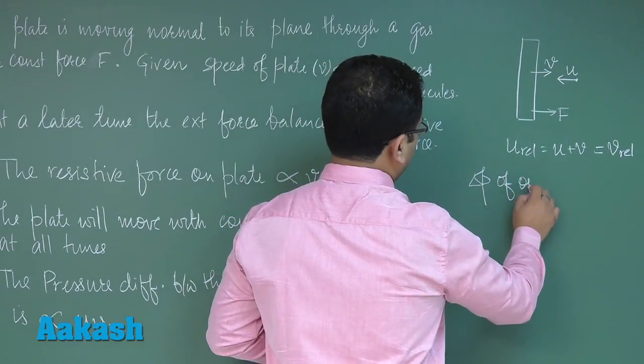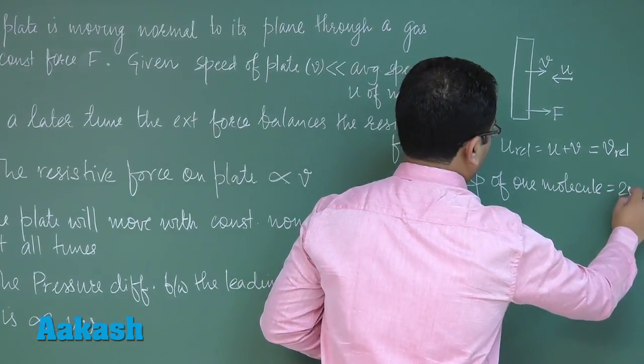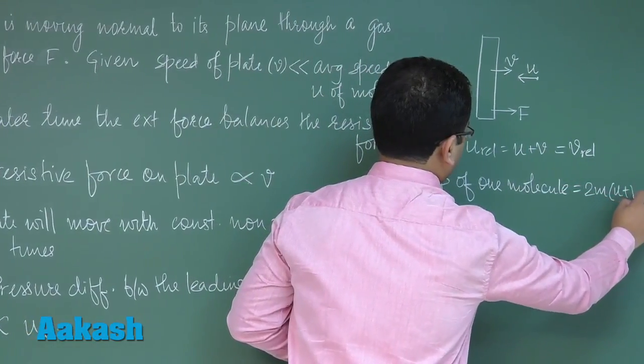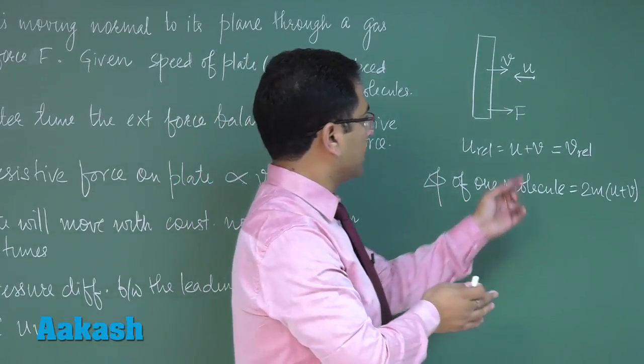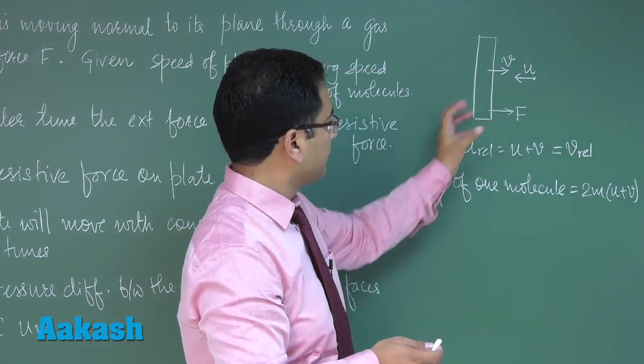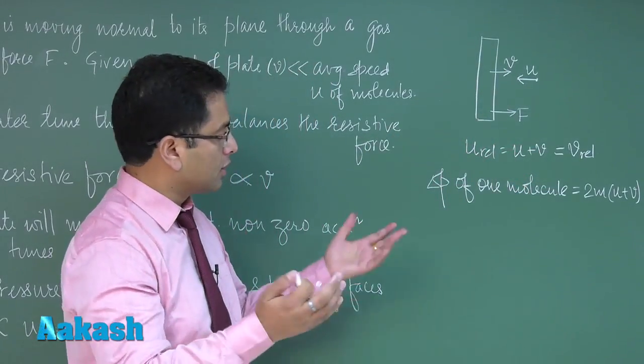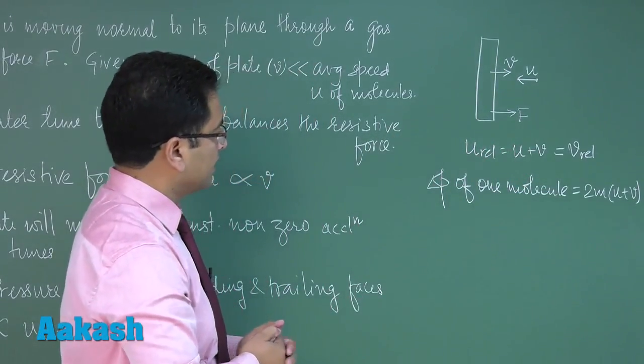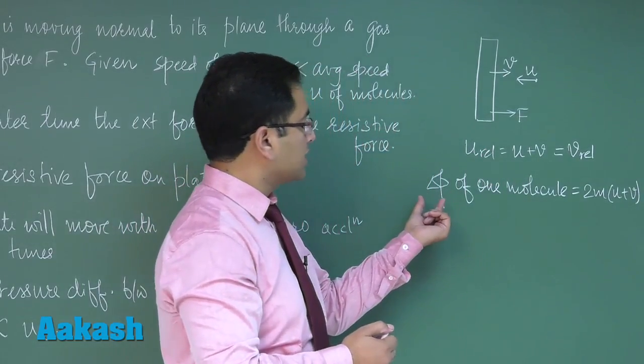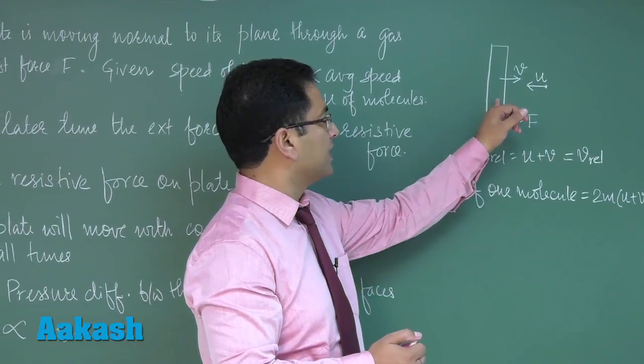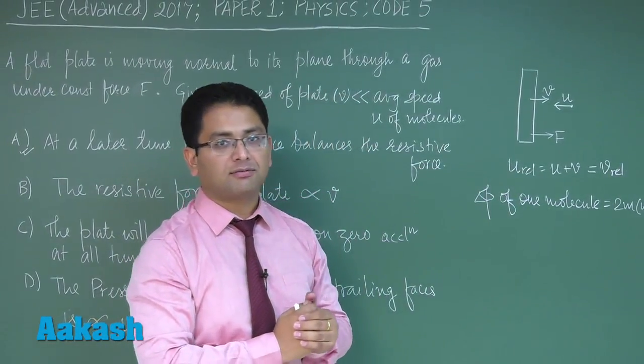Now let's try to see how much is the change in momentum of one molecule, and that will quite obviously be 2m(U + V). You can directly subtract V relative minus U relative because the velocity of the plate is constant and the same factor would get cancelled out. So you need not go into detailed kinematics. This is the change in momentum of one molecule, and the same change in momentum would also be experienced by the plate because of the straightforward Newton's third law of motion.